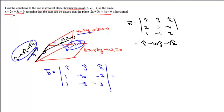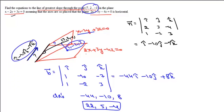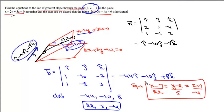Computing the cross product: for i it is (-30 - 14) = -44i; for j it is -(3 + 7) = -10j; and for k it is (-2 + 10) = 8k. So the direction ratios of the line of greatest slope are -44, -10, 8, or simplified: 22, 5, -4. Since we have the direction ratios and the point (7, 2, -1), the equation of the line of greatest slope is: (x - 7)/22 = (y - 2)/5 = (z + 1)/(-4).